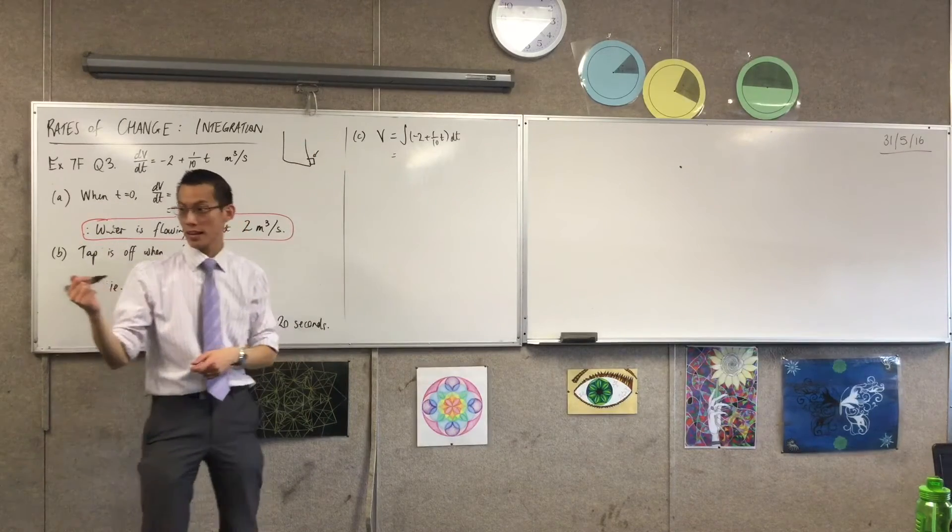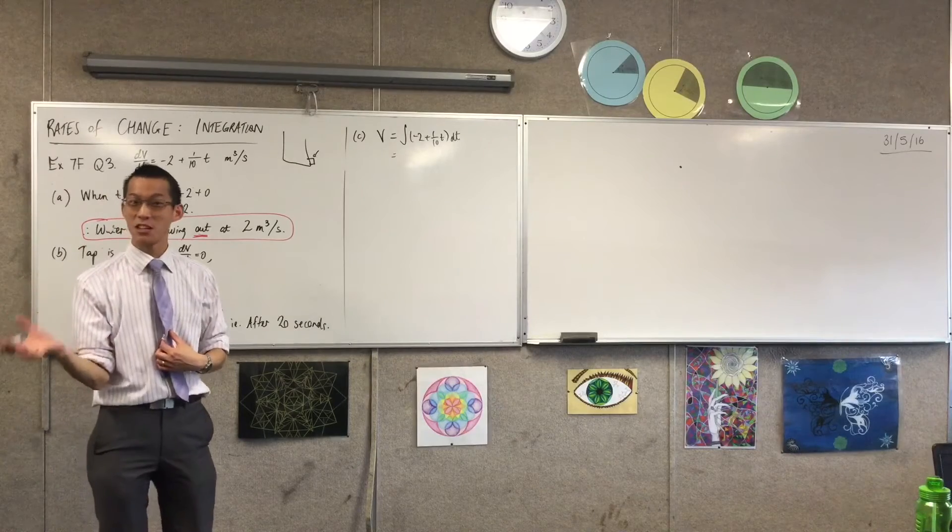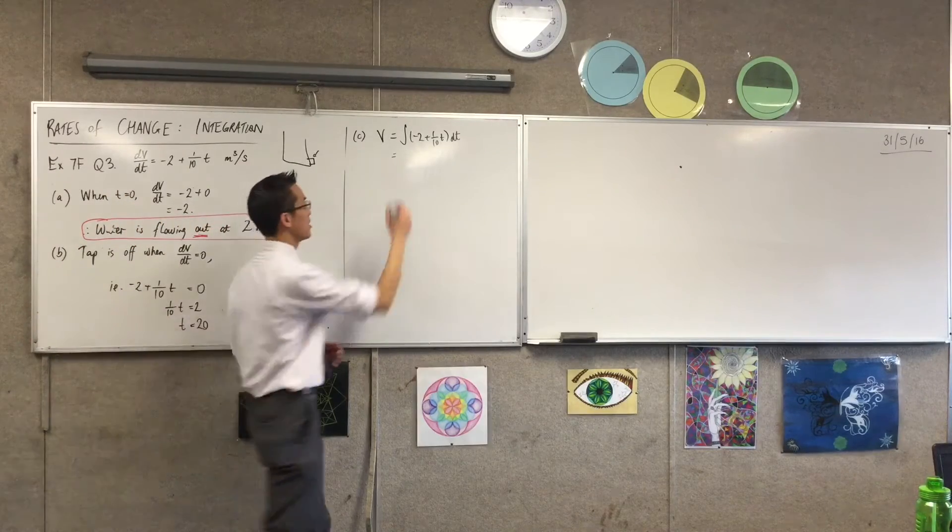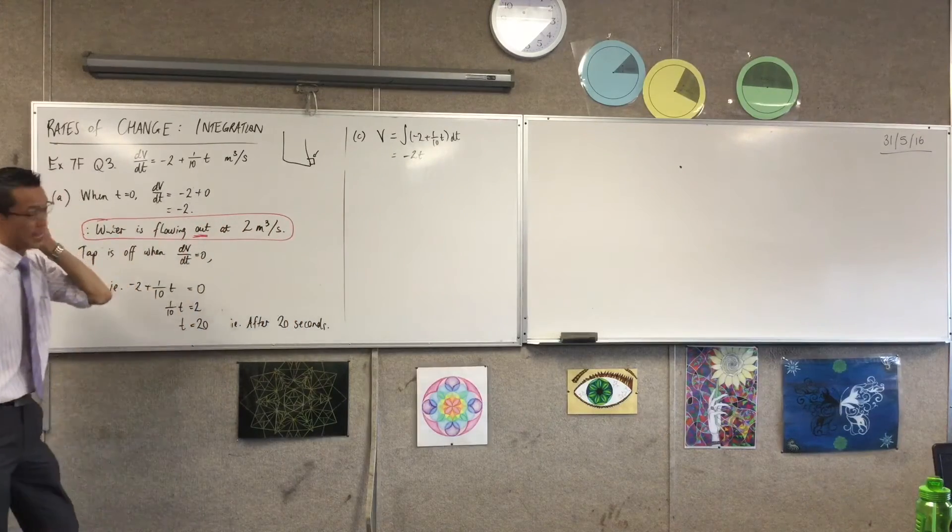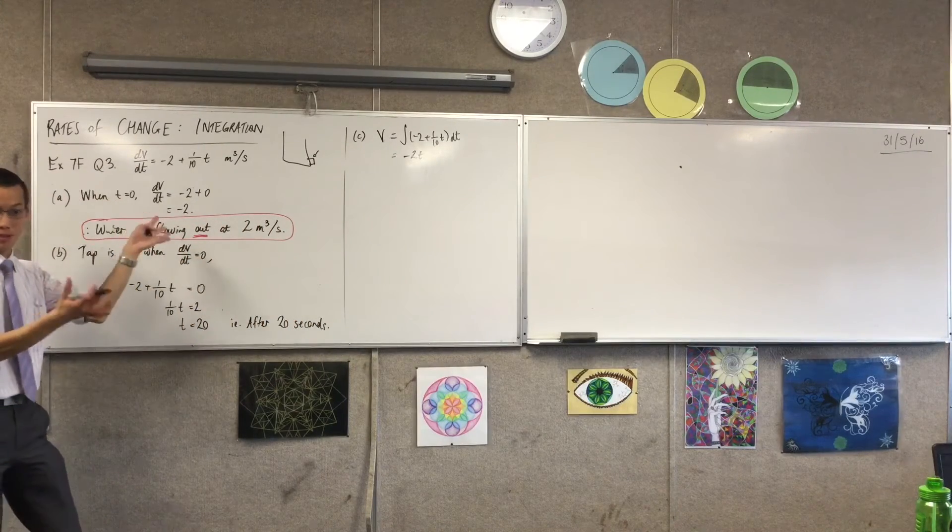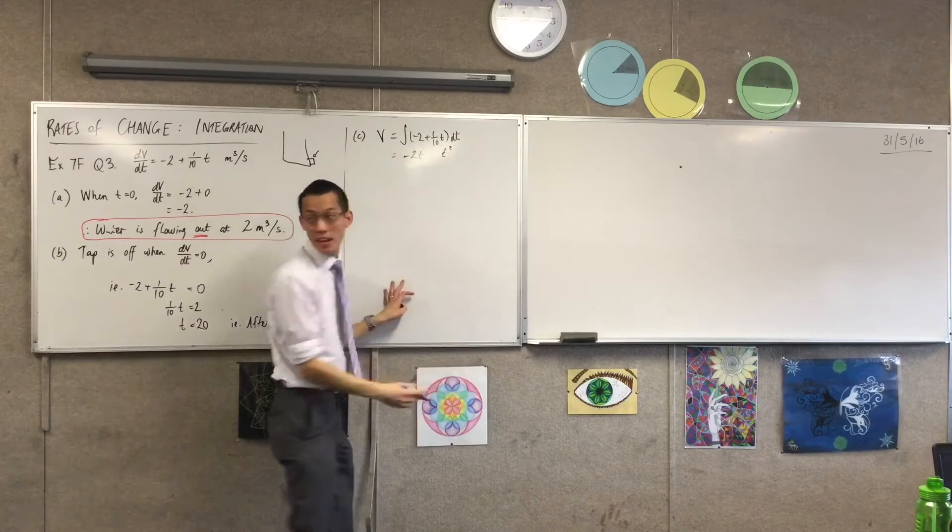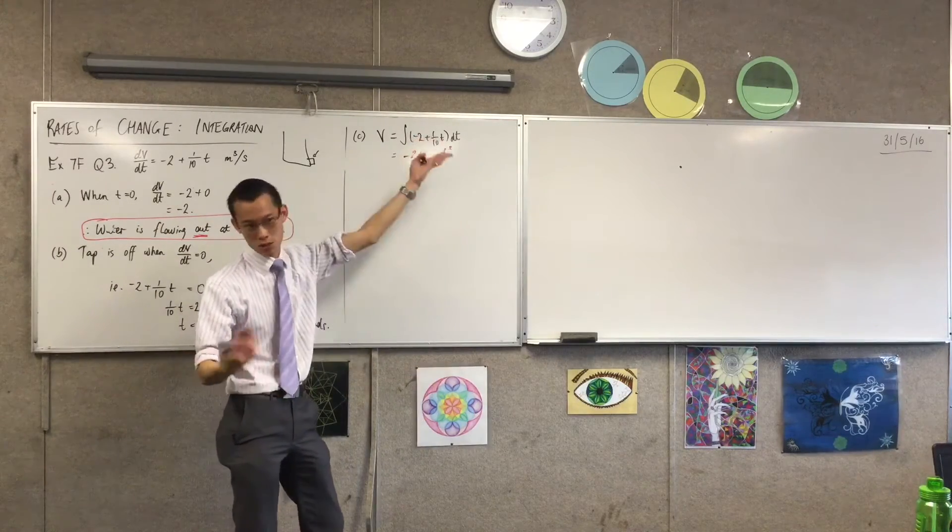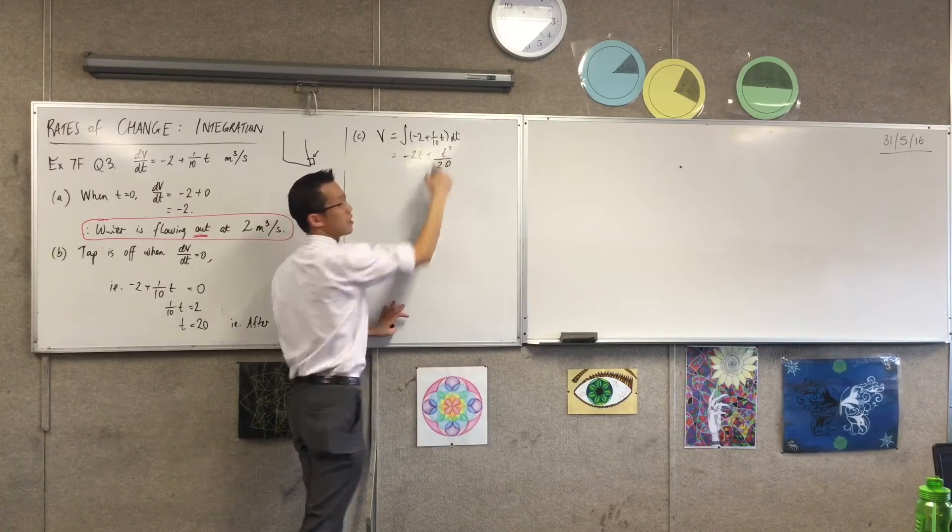So when you integrate negative 2, what do you get? Minus 2t. When you integrate 1 over 10t, what happens to the power? It goes up. So that power goes up, and then I have to divide by the new power, which of course is 2. So I'm getting 1 over 20. Are you happy with that?